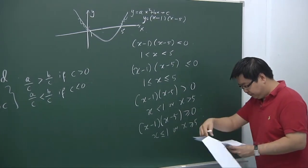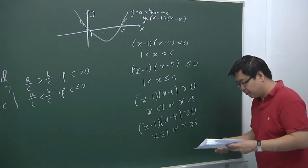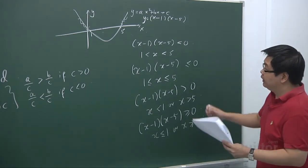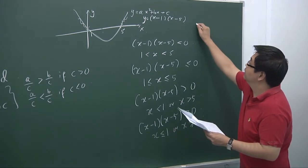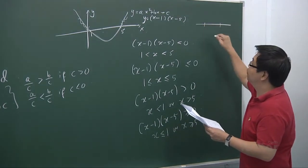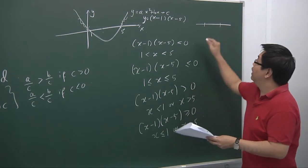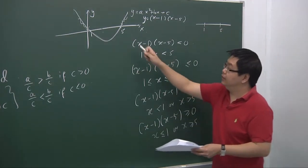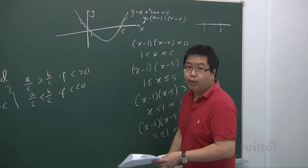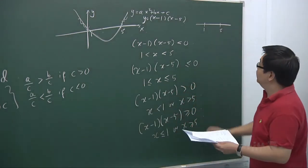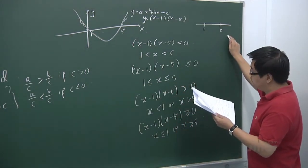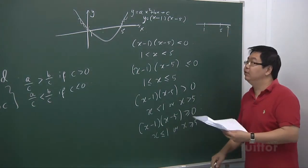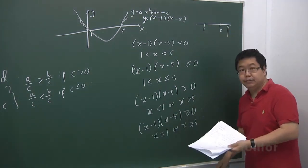Now let's look at another approach using the number line. In the number line method, it's very similar. The difference is that instead of drawing the graph, I just mark the two points — the roots of the equation. Then I identify a value to the right of 5, say x equals 10.